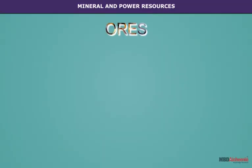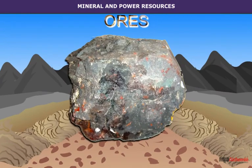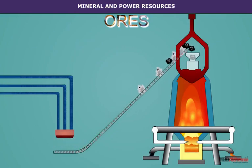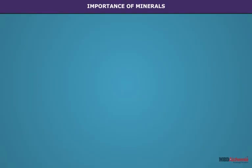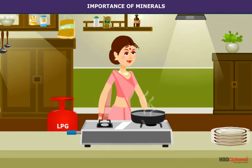A mineral from which a metal is obtained is called an ore. The ores are extracted through mining and then refined to extract the valuable elements. The most common process is extraction of iron from its ores. The importance of a mineral can be understood from various kinds of products like the household utensils and fuel that we use in our daily life.